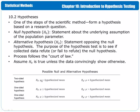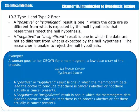We do that because we are testing the population parameter. There is no need to test the sample statistic because that is our evidence. We already know what our evidence is, and so we don't try to test the evidence. We are testing the population values using the evidence.